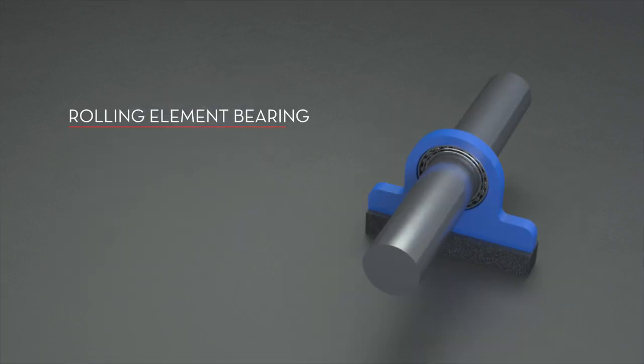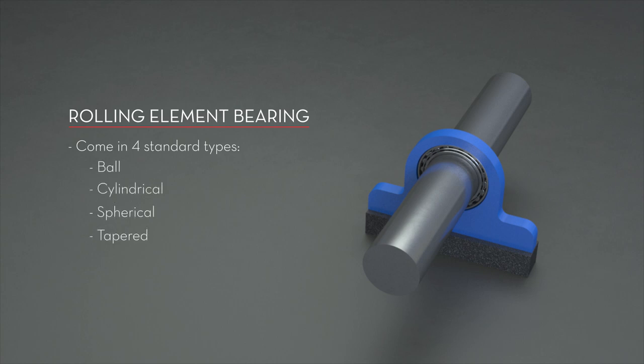Rolling element bearings for industrial machinery come in four standard types: ball, cylindrical, spherical, and tapered bearings.